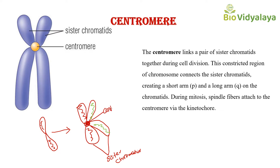The sister chromatids are held together at a region called centromere. Centromere links the pair of sister chromatids together during cell division. This constricted region of the chromosome connects sister chromatids, creating a short arm called the P arm and a long arm called the Q arm on the chromatids.